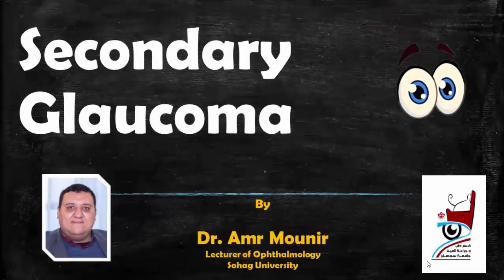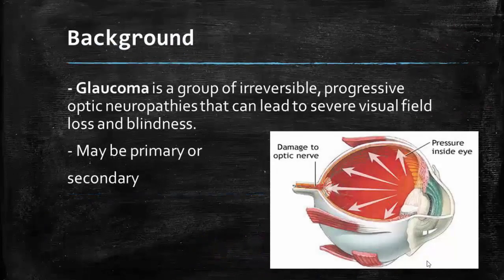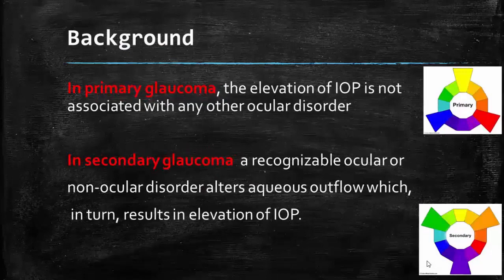Hi my dear friends. In this presentation we will discuss secondary glaucoma. Glaucoma is a group of irreversible progressive optic neuropathies that can lead to severe visual field loss and blindness due to optic atrophy. It may be primary or secondary glaucoma. In primary glaucoma, the elevation of the intraocular pressure is not associated with any other ocular disorder, while in secondary glaucoma, an ocular or non-ocular disorder usually affects aqueous outflow, resulting in raised intraocular pressure.